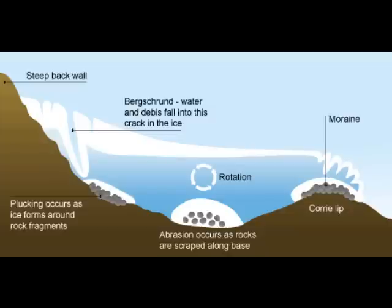Erosion occurs through abrasion and plucking. Movement along the underside of a glacier is slower than the movement at the top due to the friction created as it slides along the ground surface. Plucking occurs when cracked and broken rocks and stones become frozen to the base or sides of the glacier and are plucked from the ground or rock face as the glacier moves downhill. It leaves behind a jagged landscape.